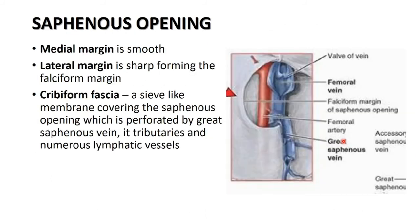The saphenous opening has margins: superior, lateral, and inferior margins which are sharp and crescent-shaped, hence called the falciform margin. Superiorly, laterally, and inferiorly they are sharper, while medially they are smooth. Medially, the saphenous opening is covered by a fascia called the cribriform fascia.